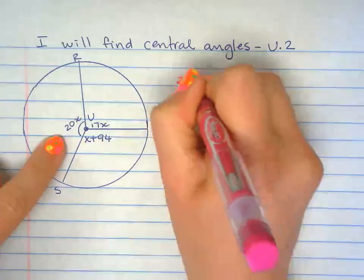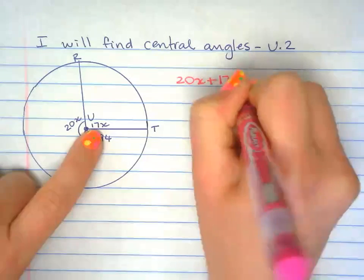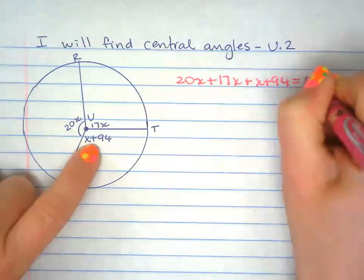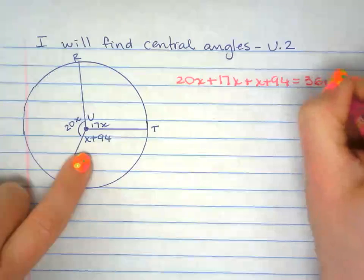So I know if I add 20x plus 17x plus x plus 94, or all three angles, they add up to 360.